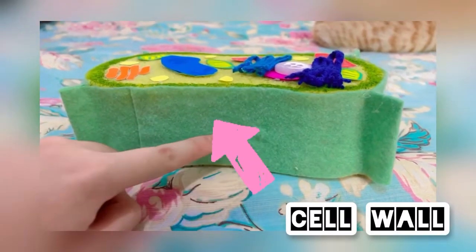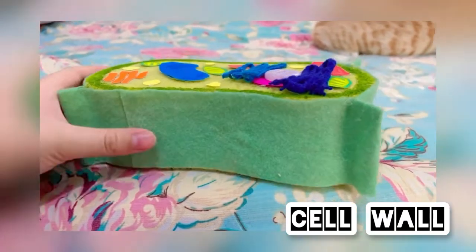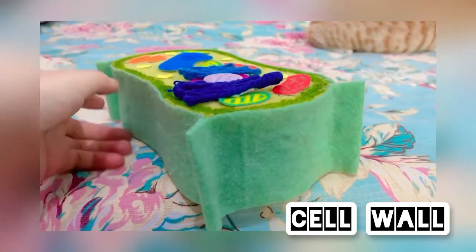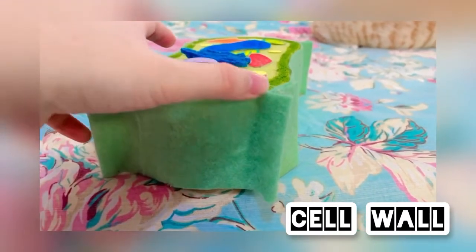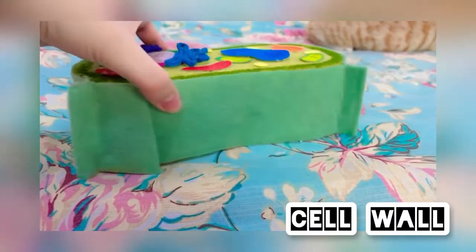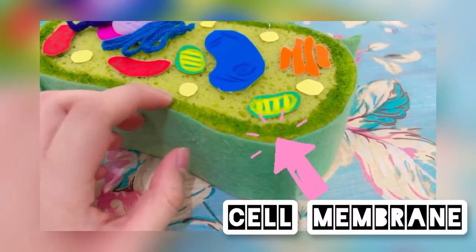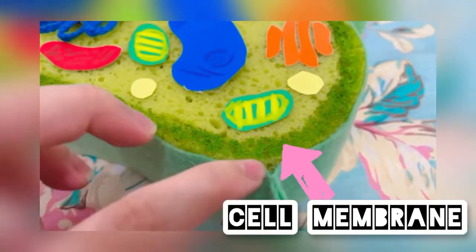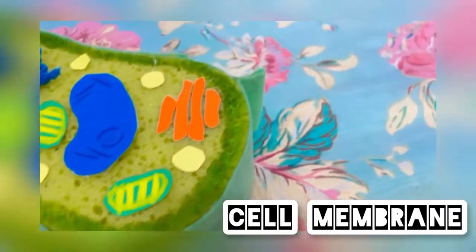This is the cell wall. The primary function of the cell wall is to protect and provide structural support to the cell. This is the cell membrane. The cell membrane plays an important role in regulating the entry and exit of specific substances within the cell.